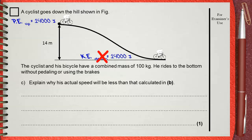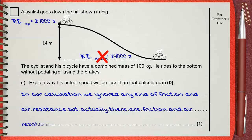In reality, there will be resistance and friction, and some energy will be lost as heat and sound due to this friction. That is why, in the true case, the potential energy at the top will not equal the kinetic energy at the bottom — the kinetic energy will be less, because some energy is lost as heat and sound. In our calculations, we ignored friction and air resistance, but in reality they cause energy loss.